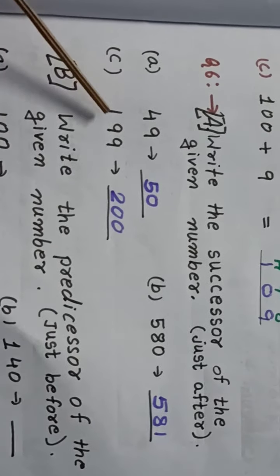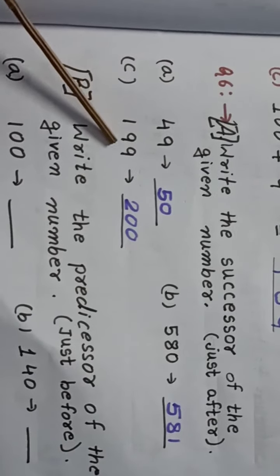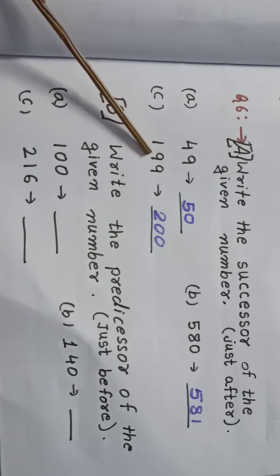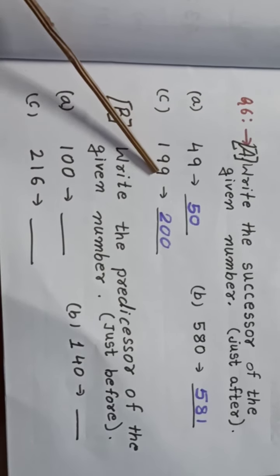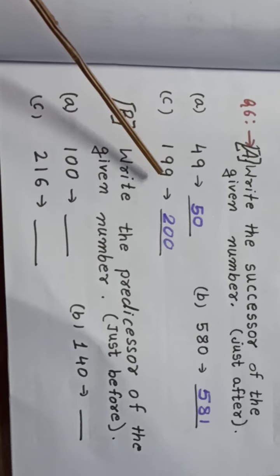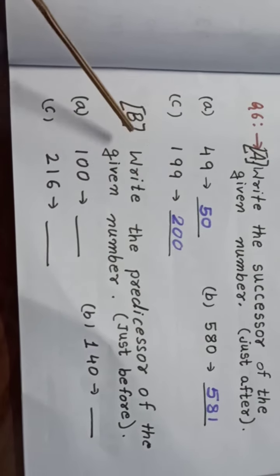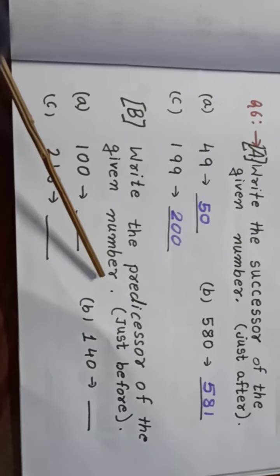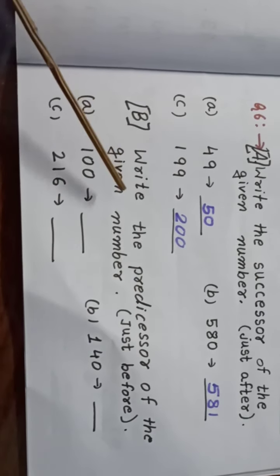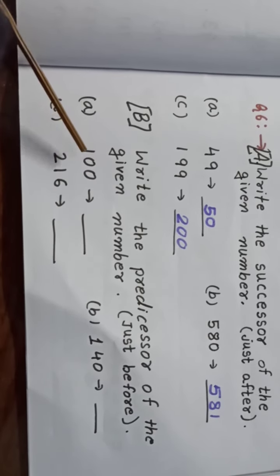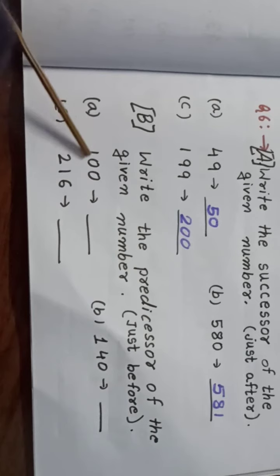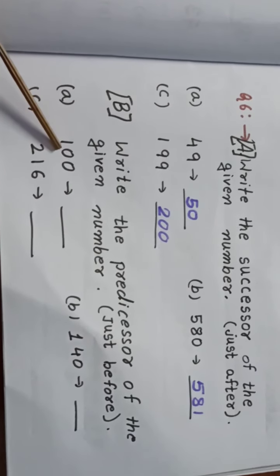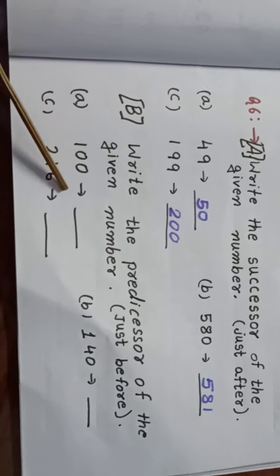Similarly, the successor of 199 — children, if you are not able to find the successor, just add 1. When we add 1 to 199, we get 200. Now, write the predecessor of the given number. This time we have to find the just-before number, meaning we subtract 1. Here is 100 — which number comes before 100? You can subtract 1 from 100 and get 99.